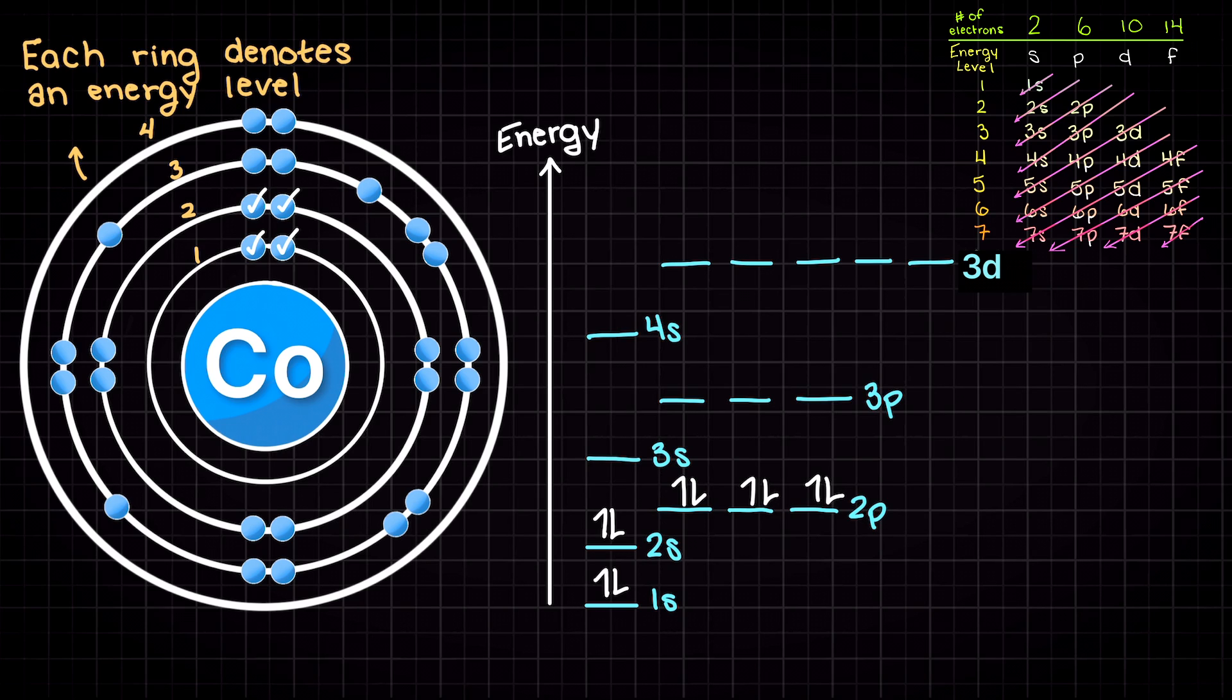In total, we can place 6 electrons in our 3, 2p orbitals. This leaves us with 19 electrons left to place.